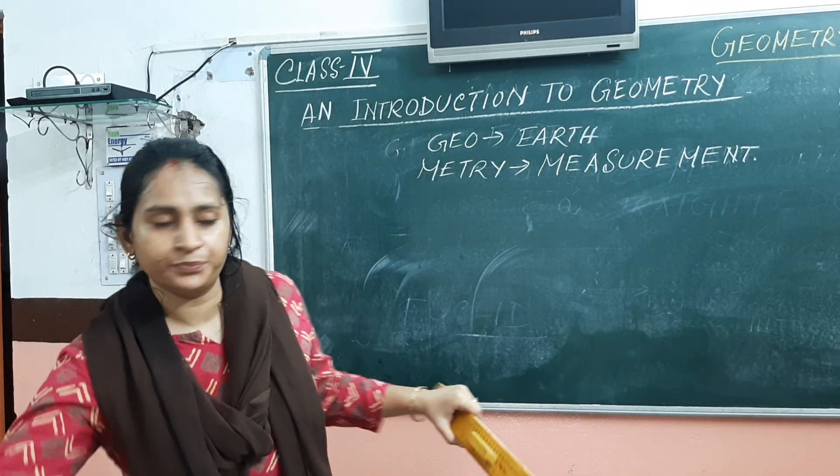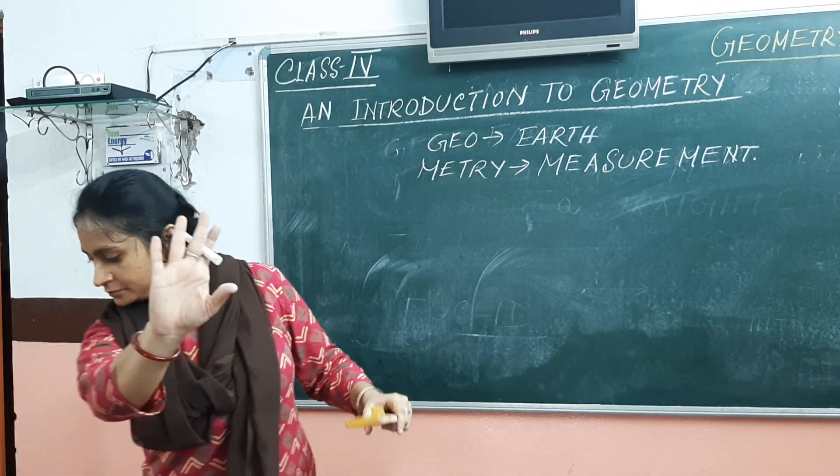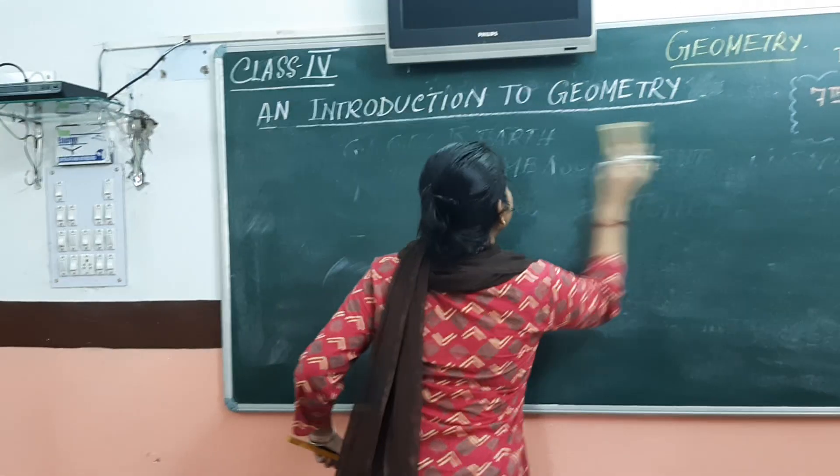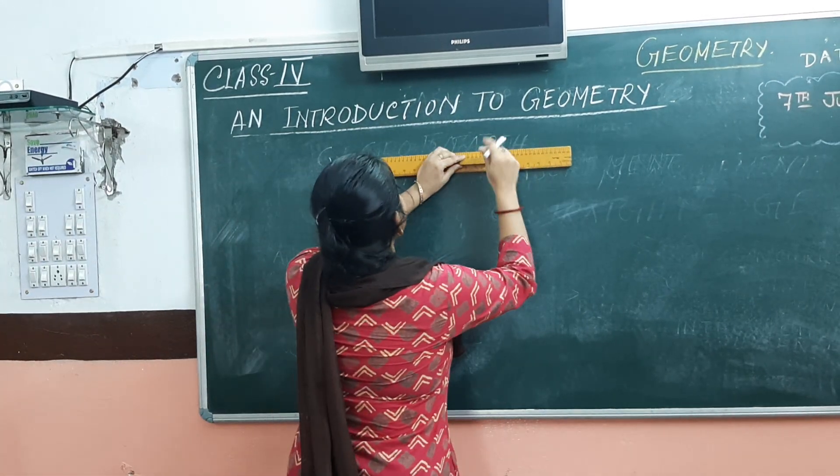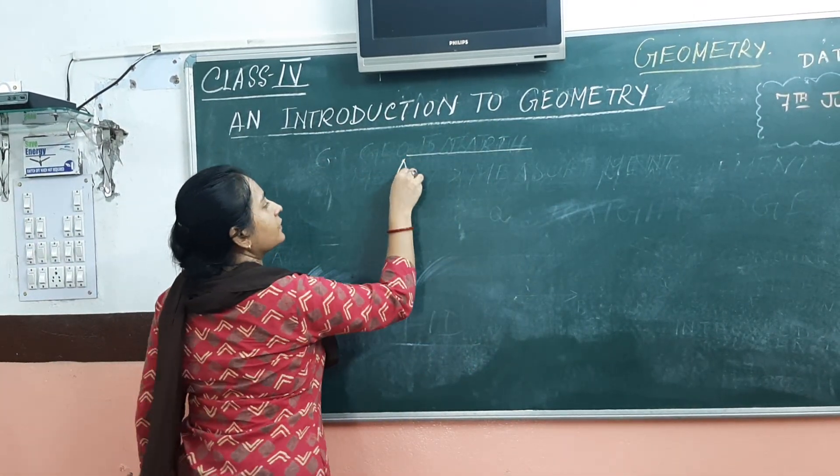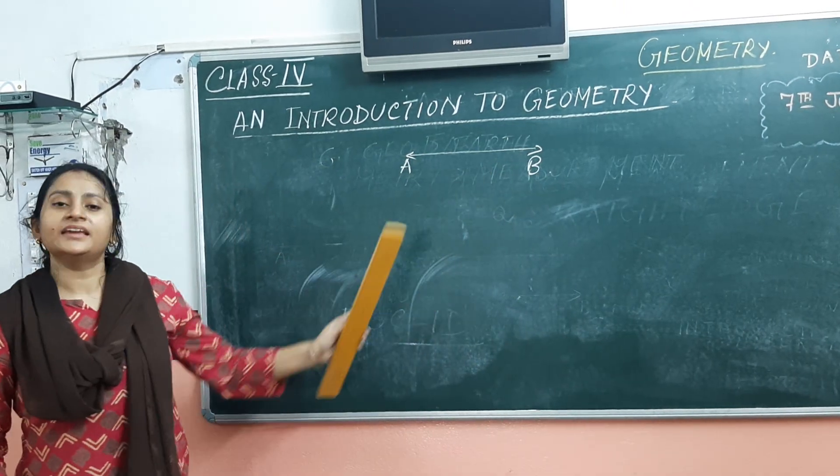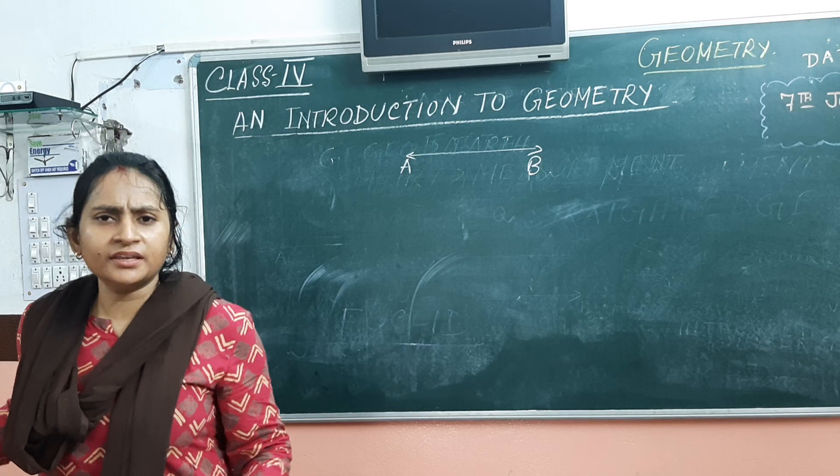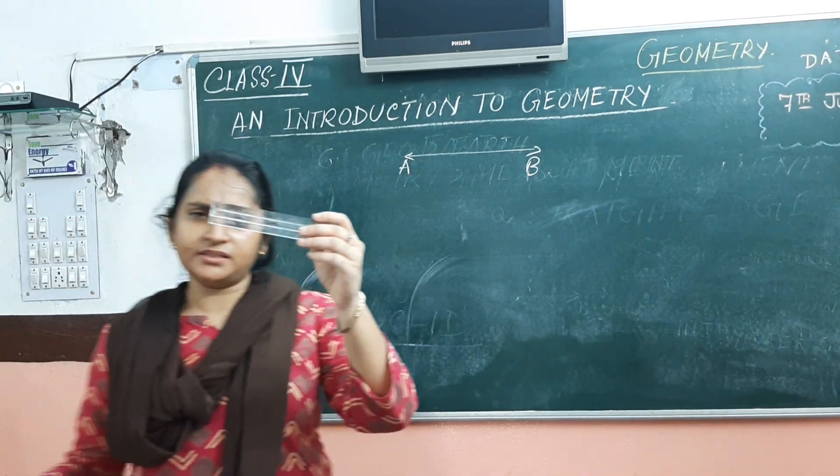I will show you how. See? This is a straight line A, B. Now one thing I have noticed children,